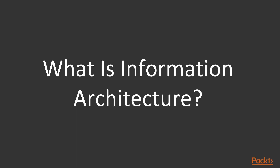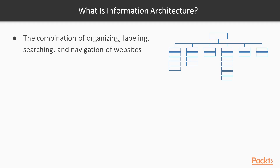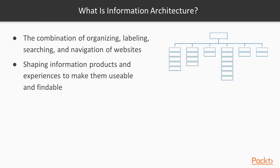So what is information architecture? How does that relate, and how can we get to grips with this topic? Information architecture is quite a clunky term — some people shorten it and call it IA. The definition, shrunk down to two sentences: it's the combination of organizing, search, and navigation of websites, and also the shaping of information products and experiences to make them usable and findable.